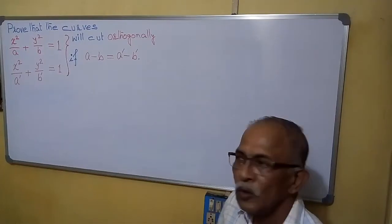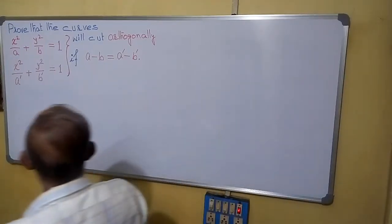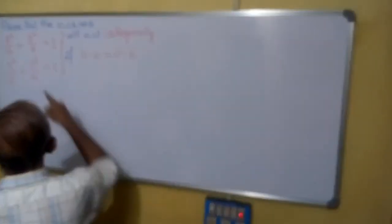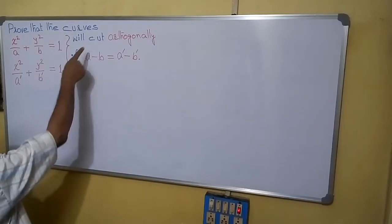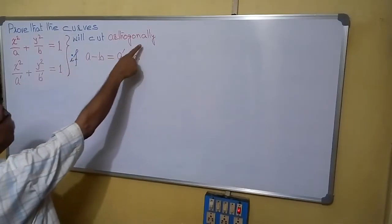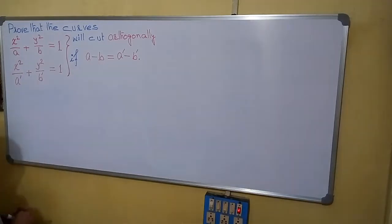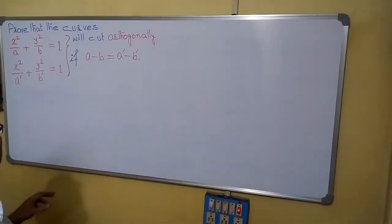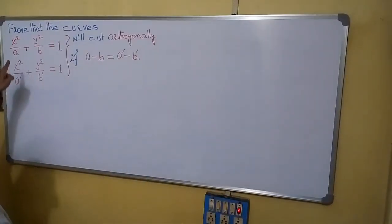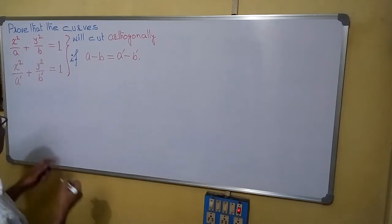Welcome. We have to show that these two curves will cut orthogonally if A minus B equals to A dash minus B dash. So first we can find the slope of the curves.